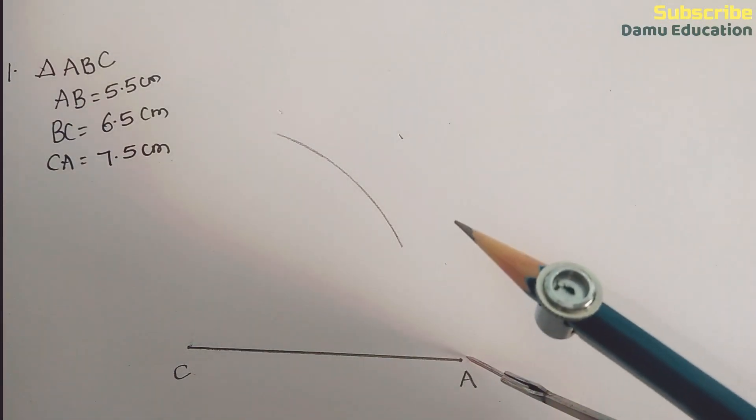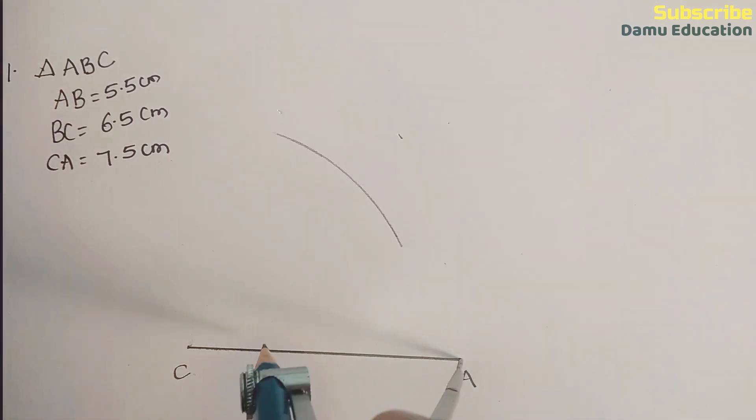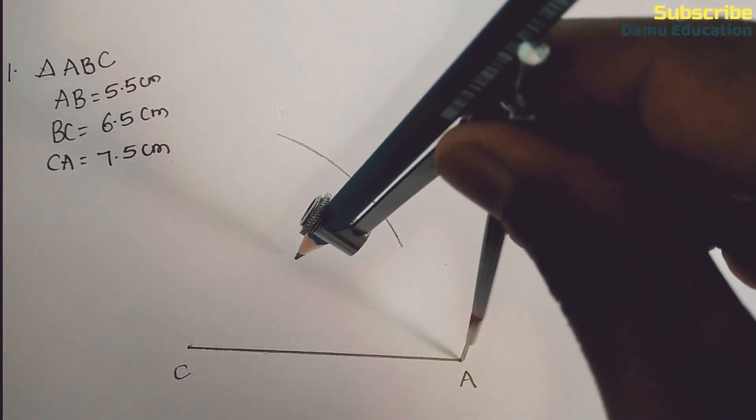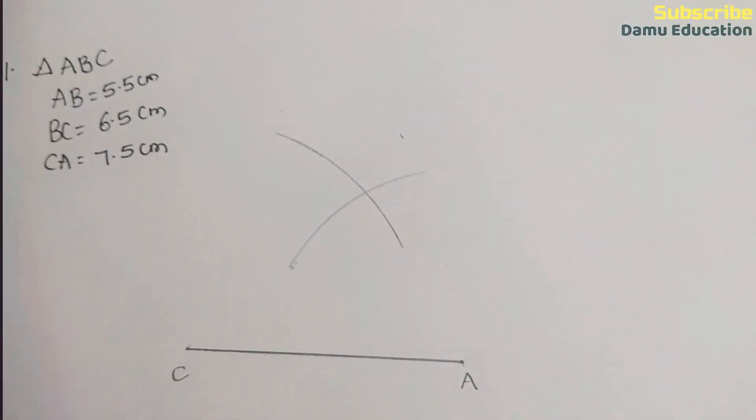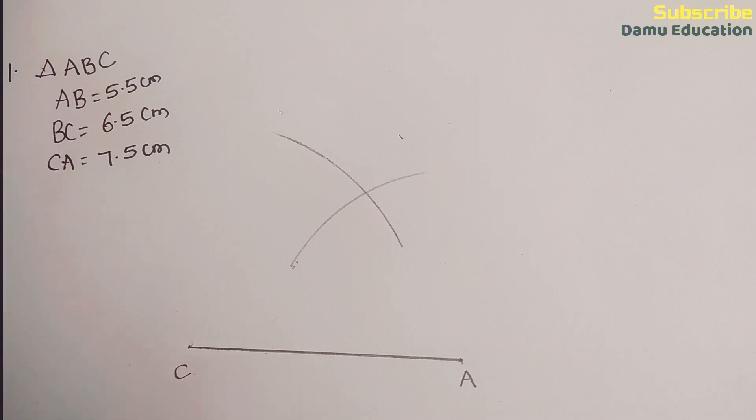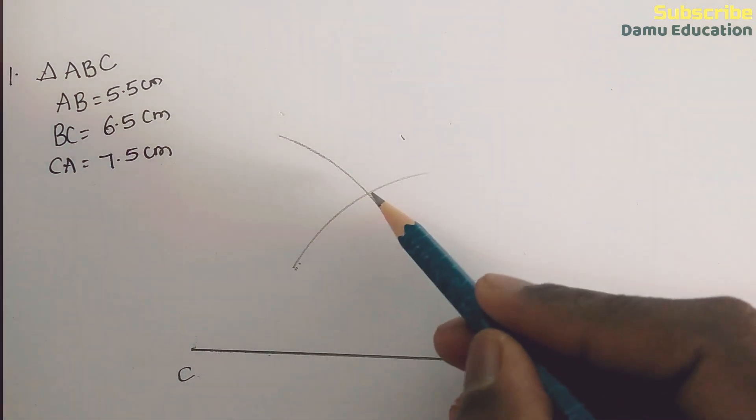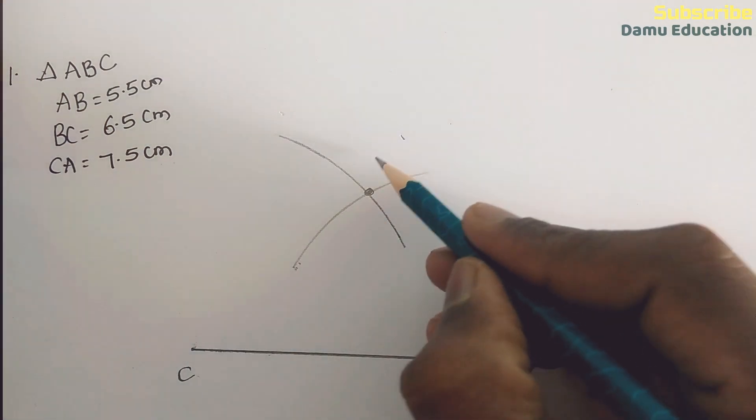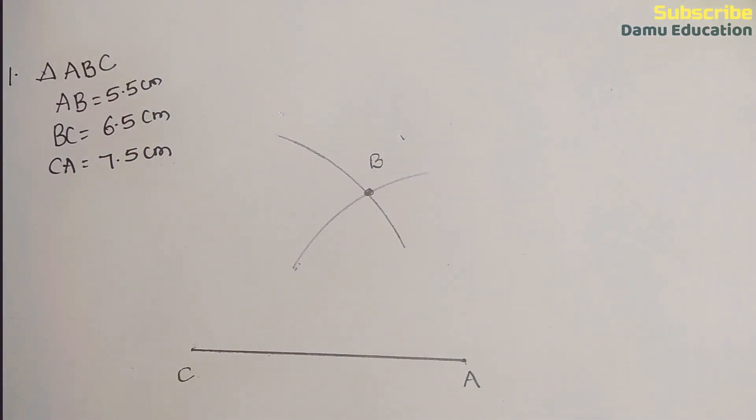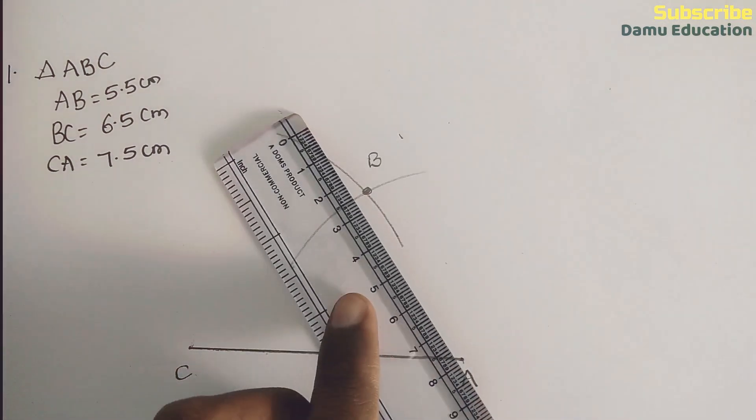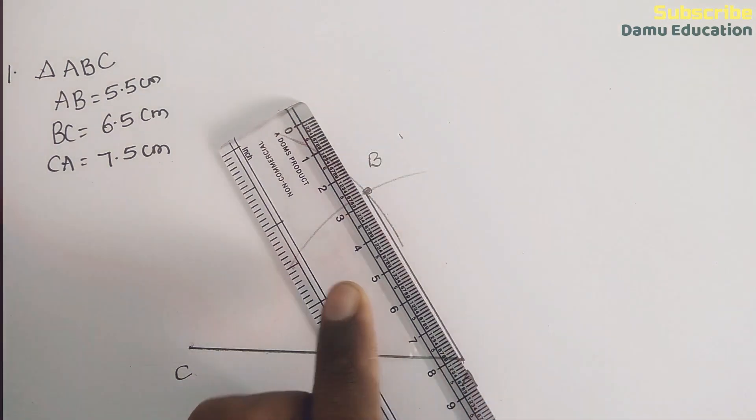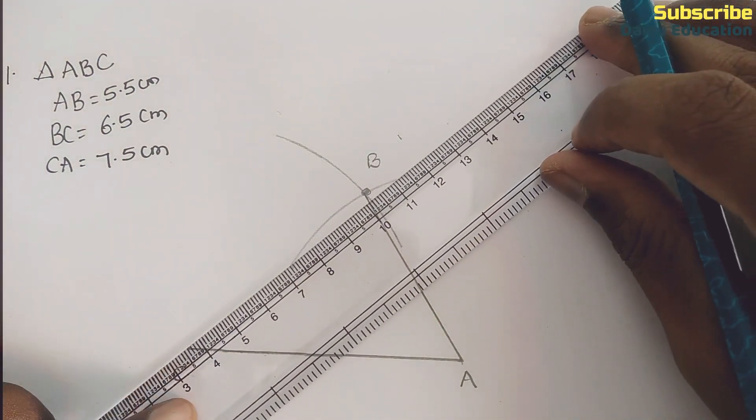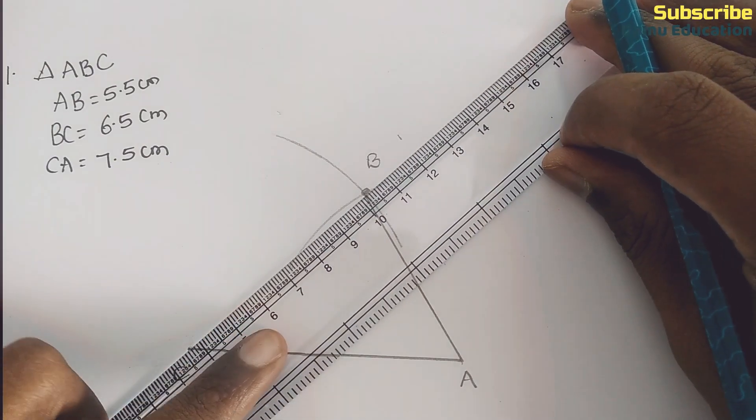With A as the center, draw an arc with radius 5.5. Make sure to mark where the two arcs intersect - that intersection point is the remaining vertex B. Now join the vertices B to A and B to C.